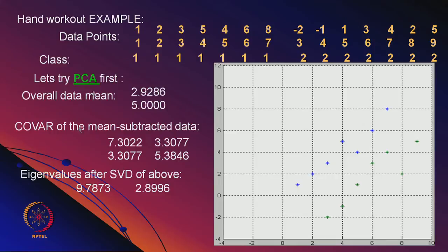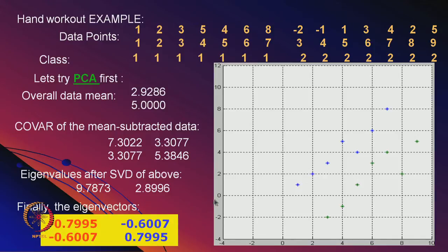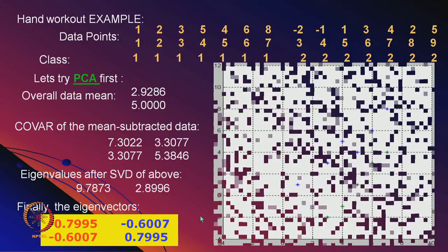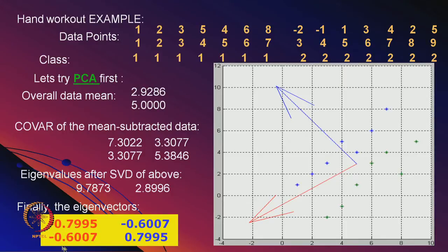Eigenvalues from SVD of ST show a large scatter along the first dimension and much less along the second. The first eigenvector points along the major axis of the elliptical data scatter pattern — this is the direction PCA identifies as having maximum variance.